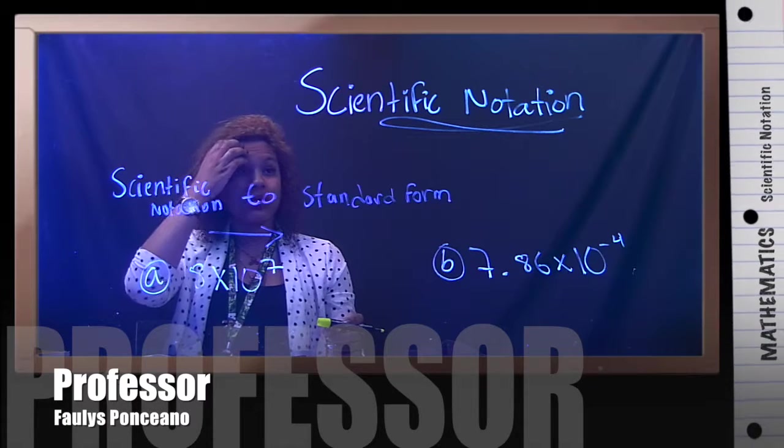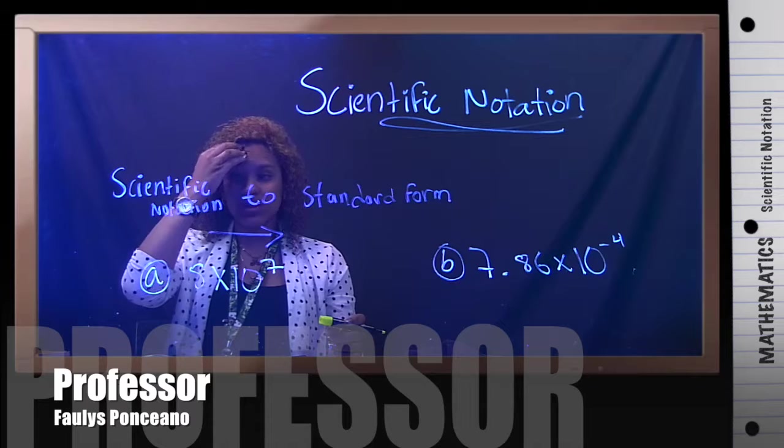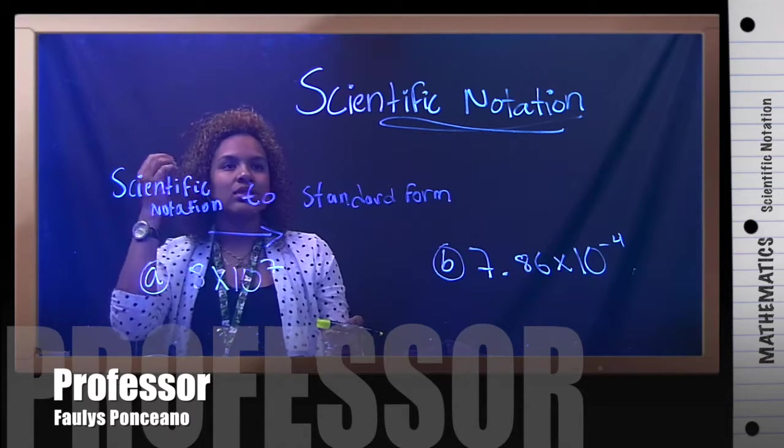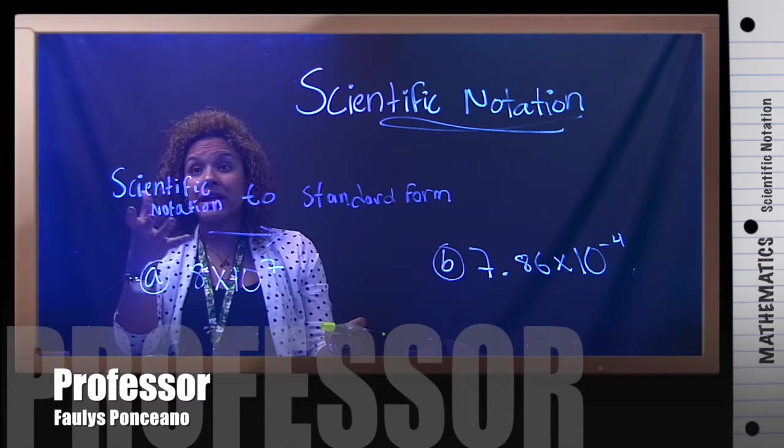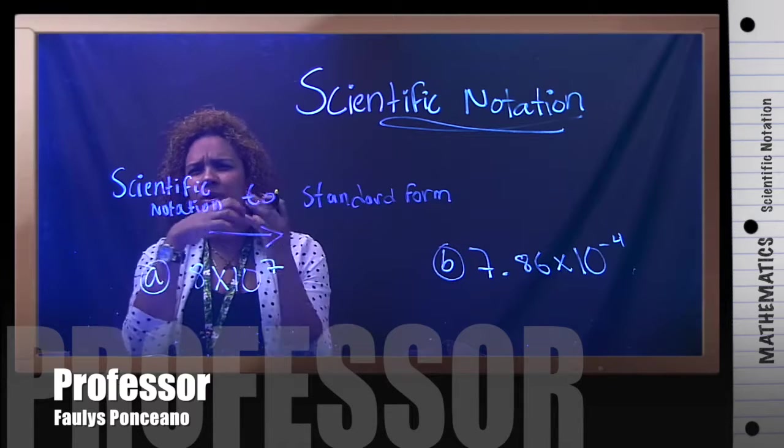In this example, we're going to use scientific notation. Now, scientific notation is a way of rewriting an answer, a big number or a very small decimal.